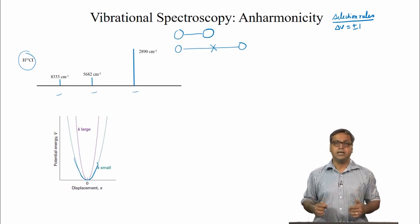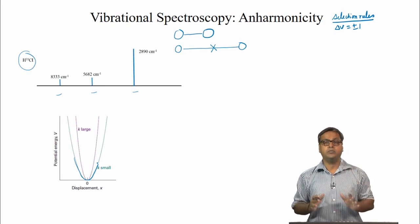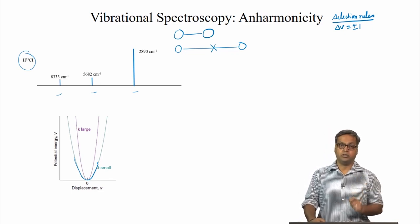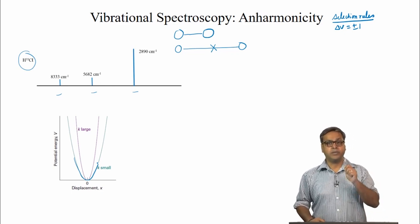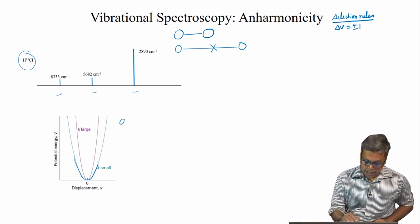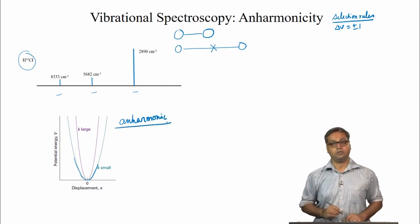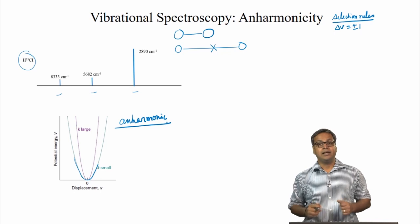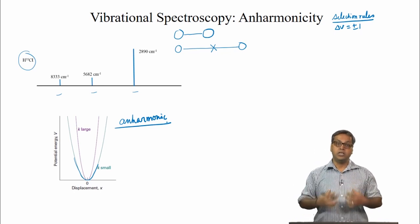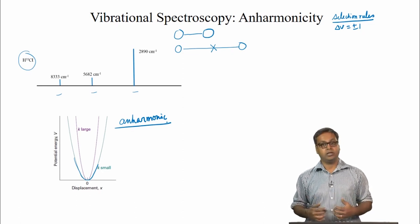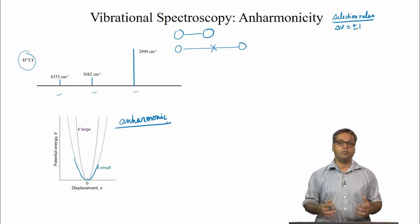But in the harmonic oscillator model, the potential energy curve as we can see is a parabola. A parabola does not allow the bond to dissociate. Thus, we can see that harmonic approximation fails in real molecules. We can say that vibrational motion for large displacement is anharmonic — that is, not harmonic — in the sense that the restoring force is no longer proportional to the displacement as in the harmonic oscillator.